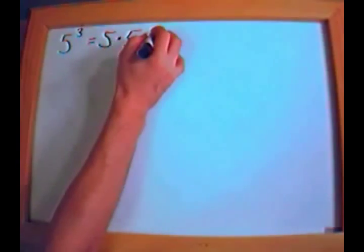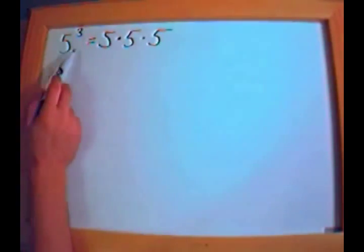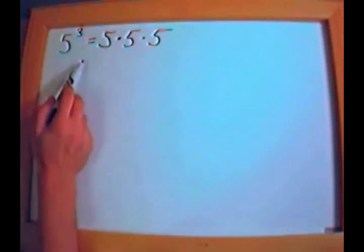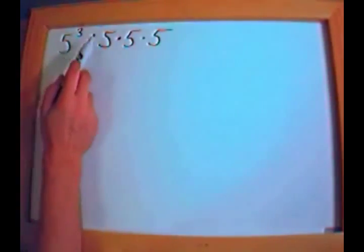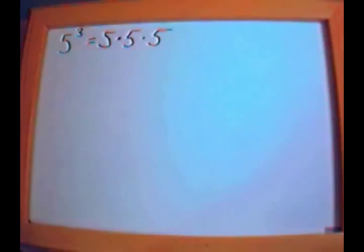We're going to start off with something pretty easy. What if we have something like 5 raised to the third power? What does that mean? Well, it means 5 times 5 times 5. So just as a review, 5 raised to the third power, or 5 cubed, is simply the bottom number multiplied by itself however many times is indicated by the top number. So 5 to the third is 5 times 5 times 5, done 3 times because we have a 3 on top.